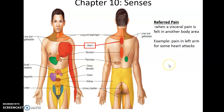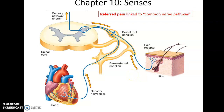The thought behind referred pain is that there's a common nerve pathway. The sensory neurons carrying information from the heart and the sensory nerve endings coming from the skin of the left arm are both being carried in the same nerve going to the spinal cord, and because of that you can get a crossover effect. That doesn't necessarily explain all examples of referred pain, but it is our current level of understanding.